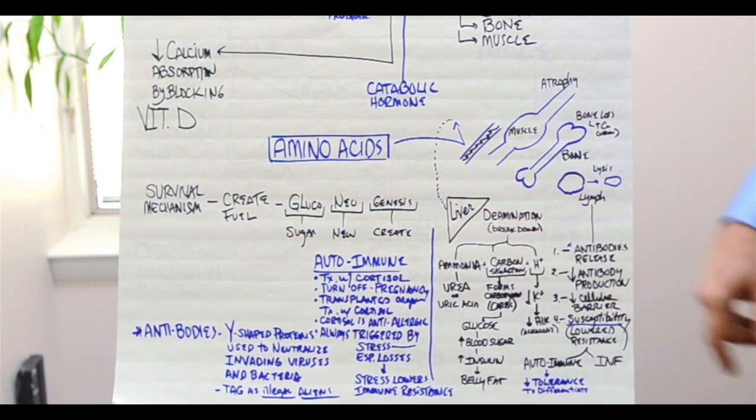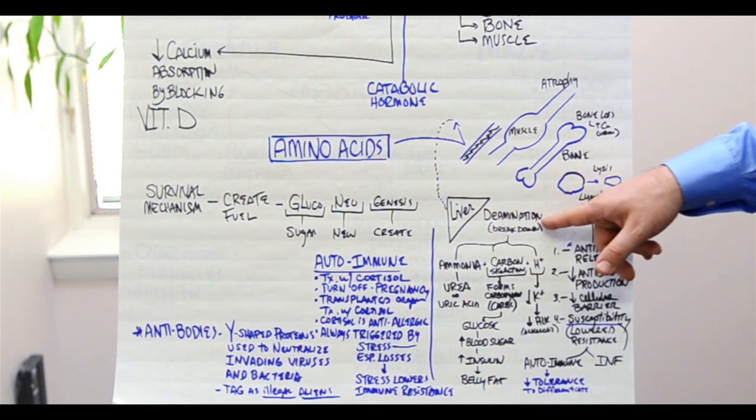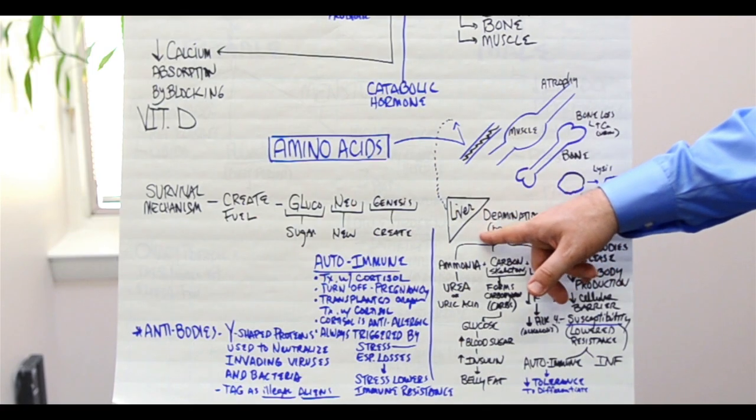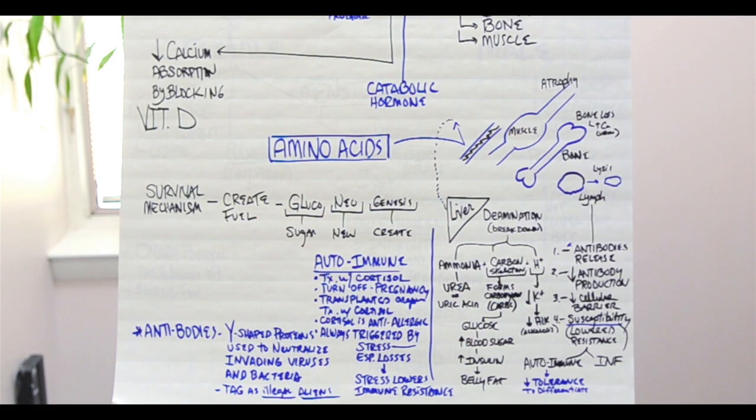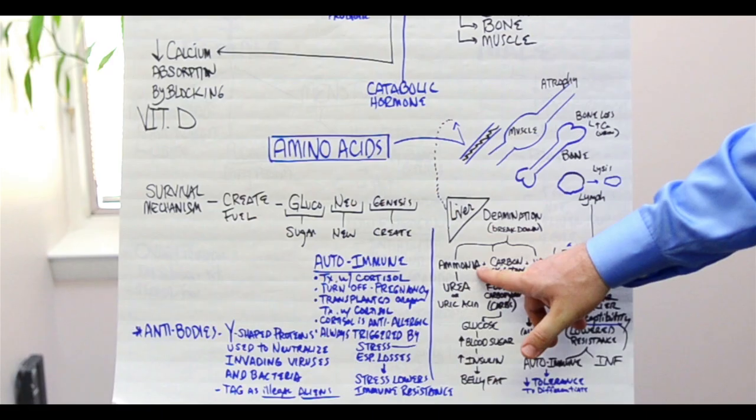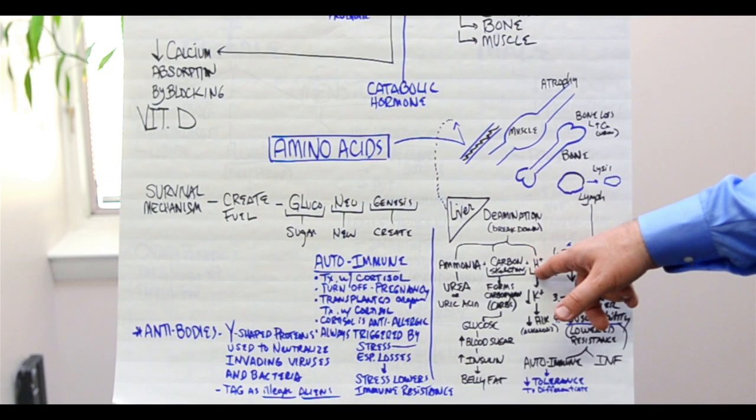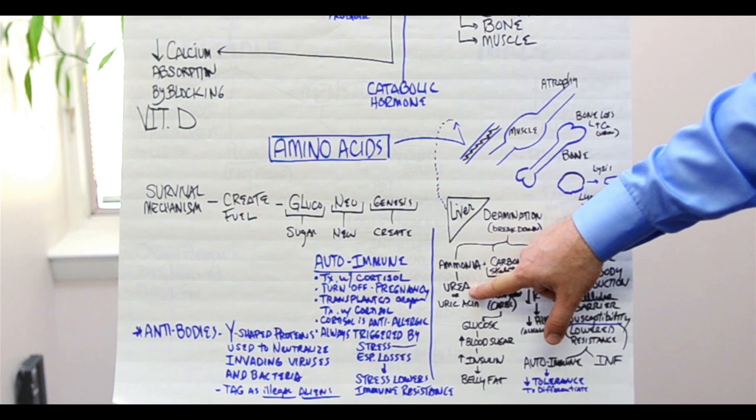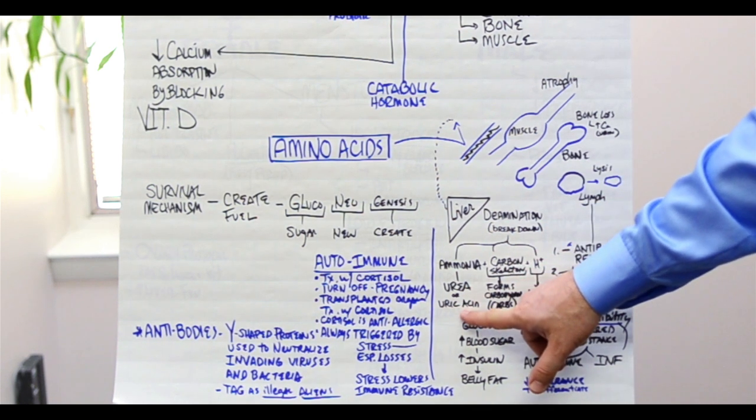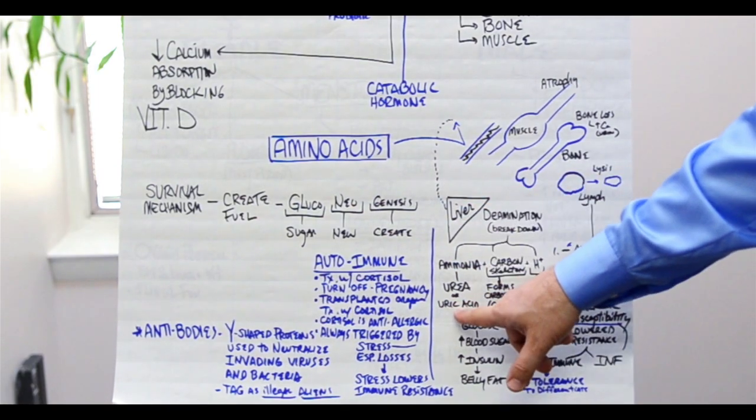They go through a process called deamination. This is a term for breakdown of amino acids. In other words, the liver will break down these amino acids into ammonia and carbon skeletons, and the hydrogen ion. The ammonia turns into urea or urine or uric acid. That's why people get gout, because this builds up too much because the liver or kidneys are damaged.